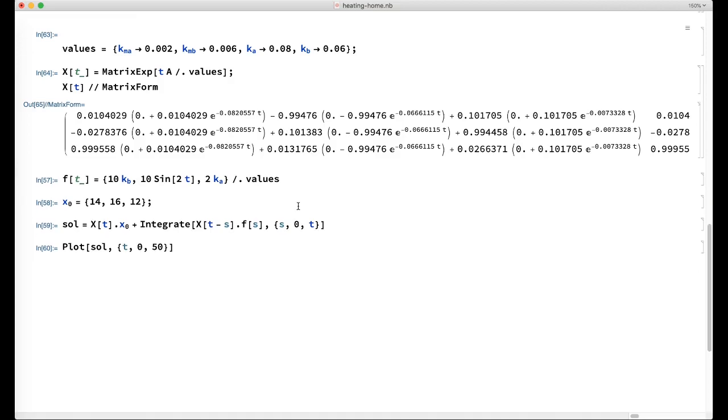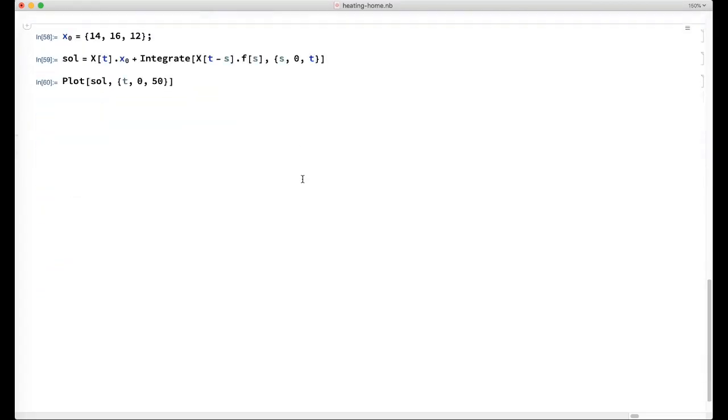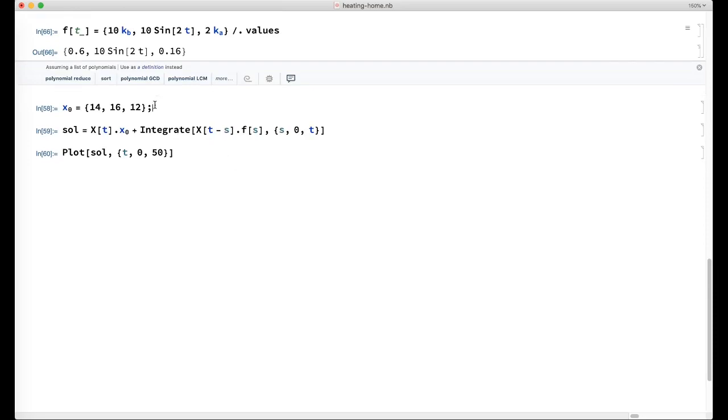Nevertheless, let's go ahead and this is the forcing vector. So in the problem, there's a term for heating the main floor. So I'm just putting in a sine function to heat the main floor. And I'll give it some starting values.